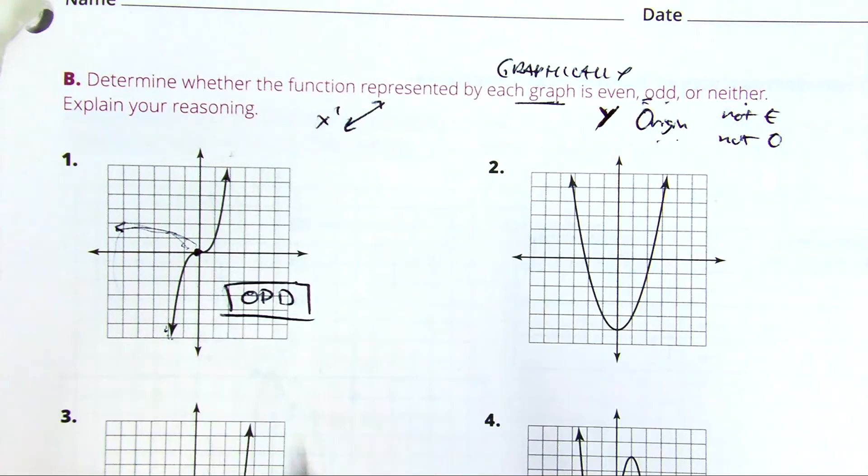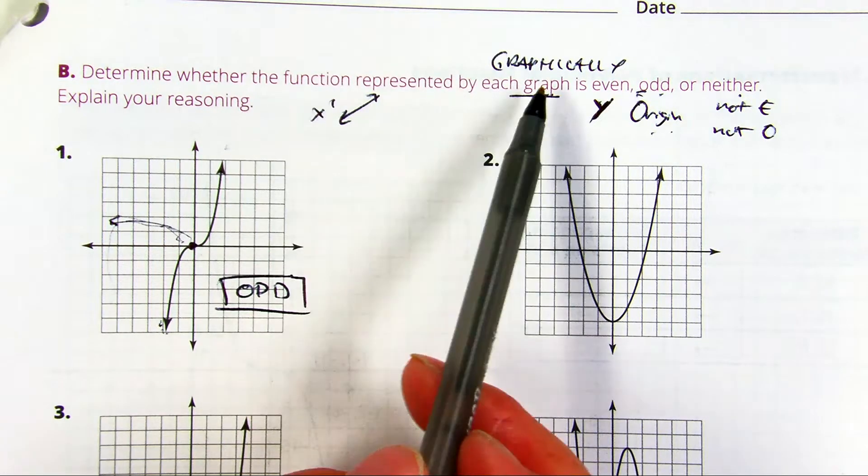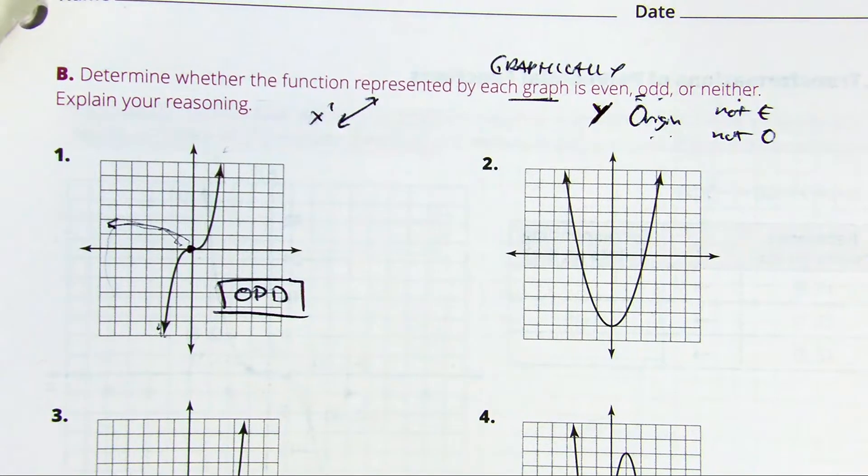Now something that the packet's missing is determining the symmetry algebraically. The star, subbing in x for negative x.